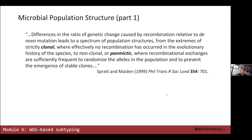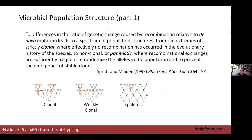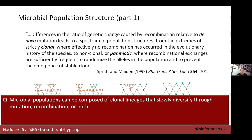Different species will have different population structures — from what's traditionally called 'clonal,' which is primarily vertical descent, to 'weakly clonal,' to 'epidemic,' and to a state called 'panmixia' where it's a free-for-all of recombinational exchange. Microbial populations can be composed of different sub-lineages, some of which are primarily highly clonal while others are highly recombinational, due to underlying biological mechanisms in certain strains that largely curtail lateral acquisition of DNA.